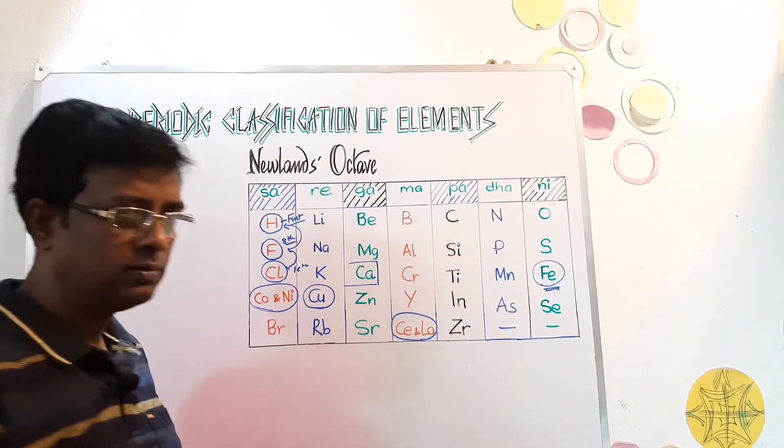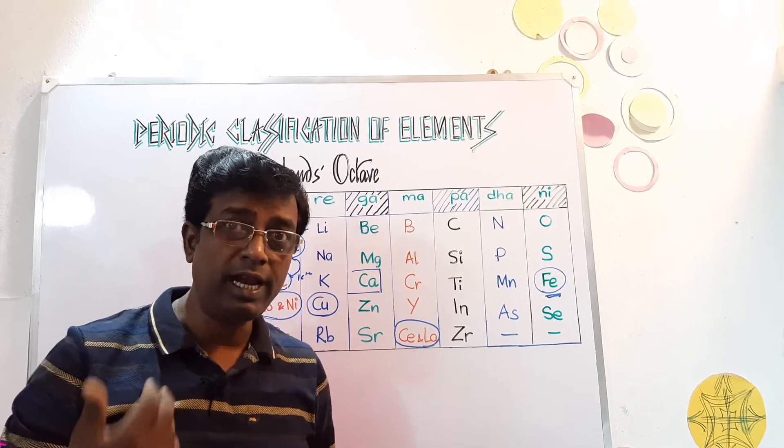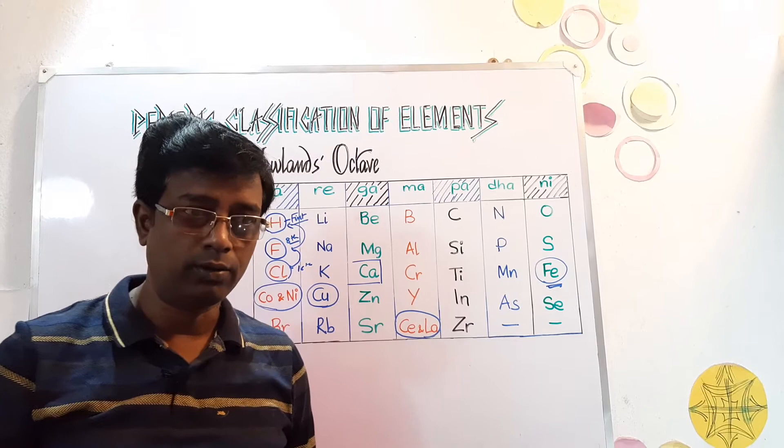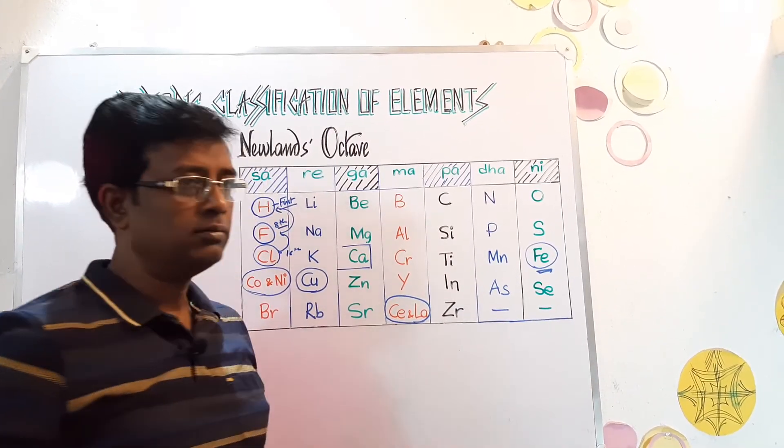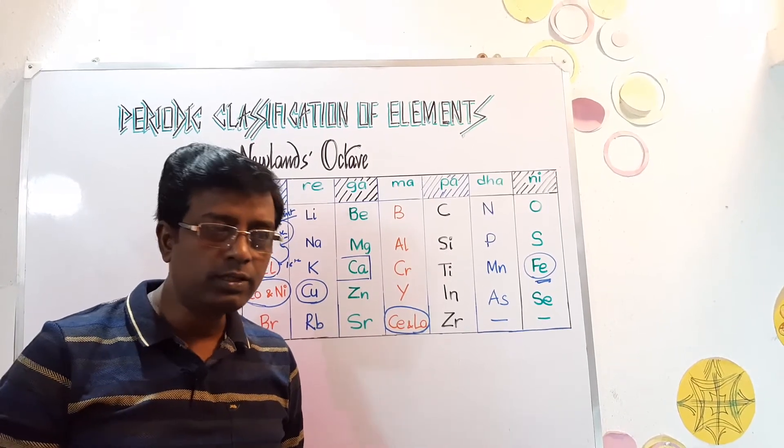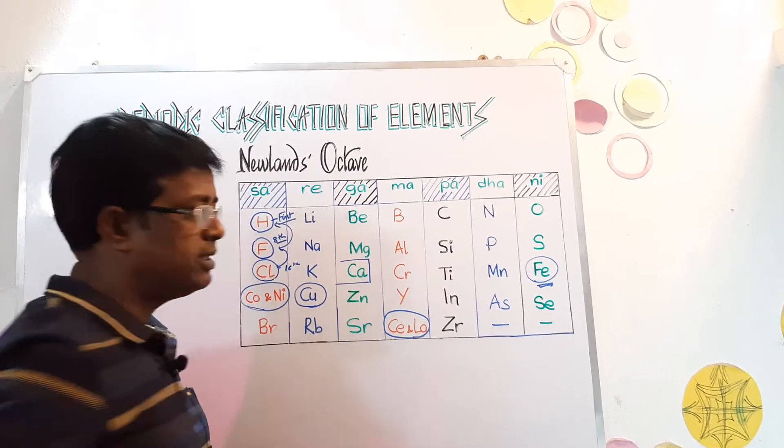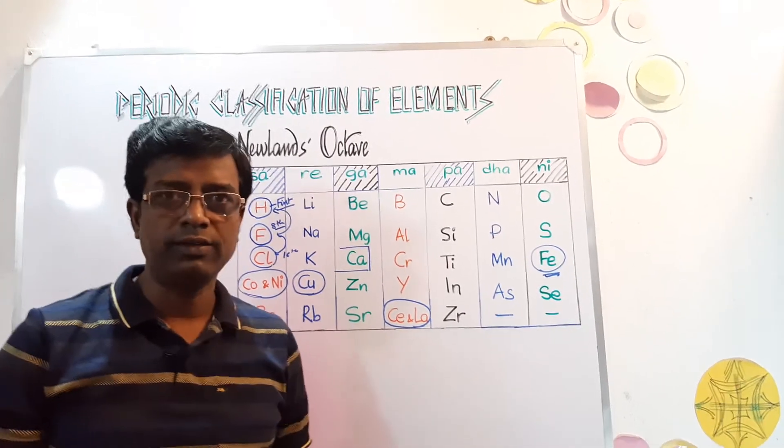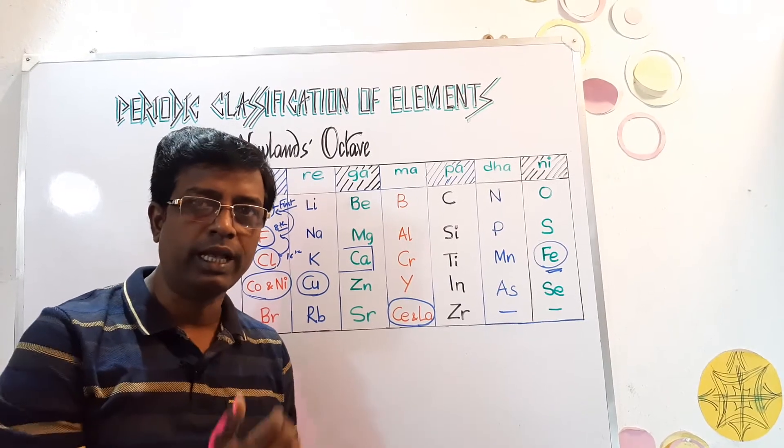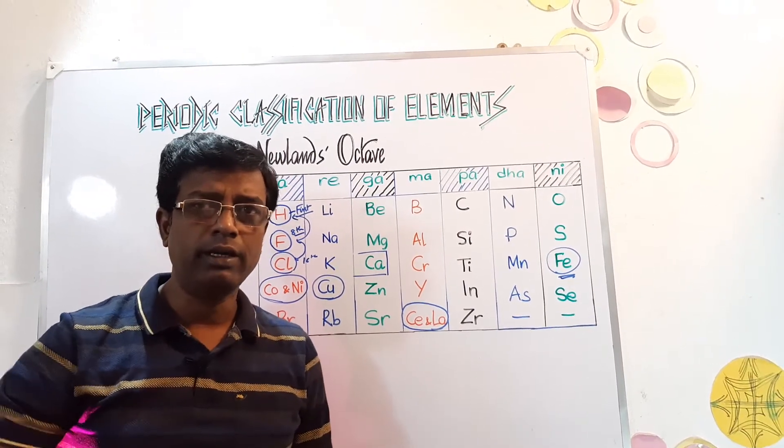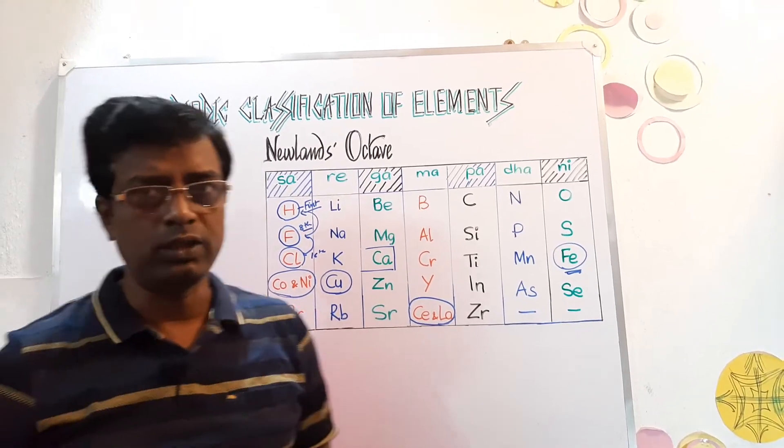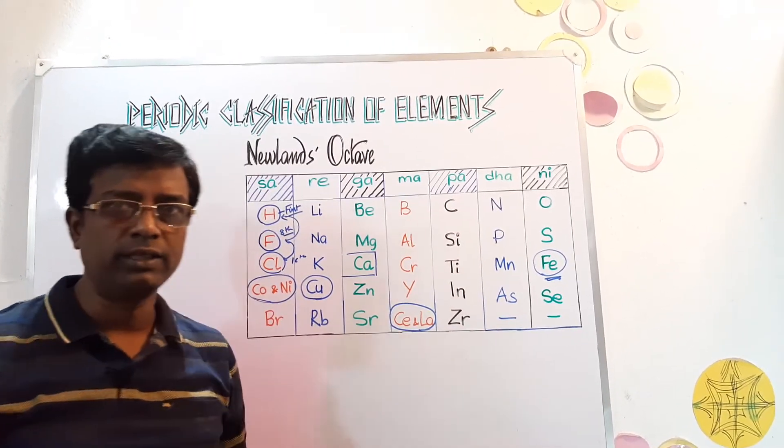But after that, the property of eighth, every eighth element are similar, it could not hold true. So, beyond calcium, Newland's Law of Octave doesn't hold true. Only that means what? Up to calcium means Newland's Law of Octave were true only for the lighter elements and just up to calcium. And beyond that, he could not explain. So, these are some of his drawbacks and the highlighted points I have taken.